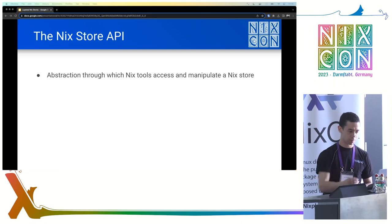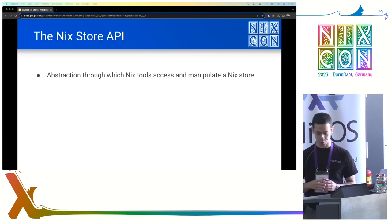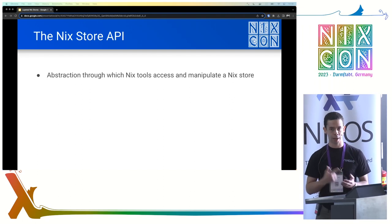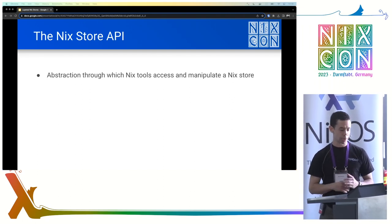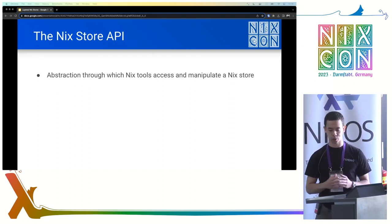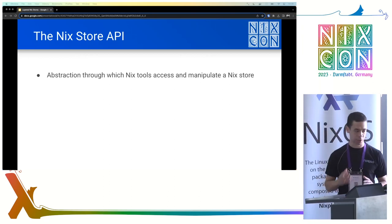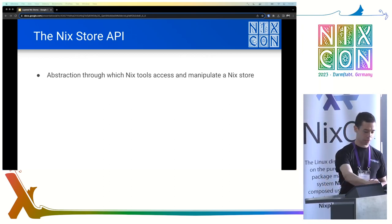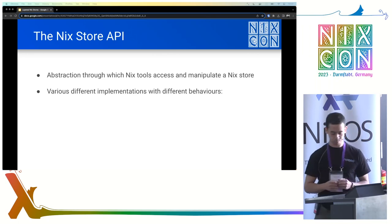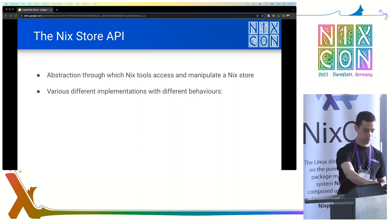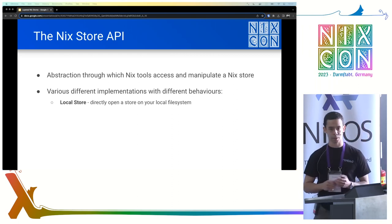The API has methods for basic operations, like checking what's in a store or for adding new stuff to a store. It also has methods for more advanced operations like garbage collection or verifying that a store's contents remain valid. There are several different implementations of the Nix store. The most prototypical of them is the local store, and as you might guess from the name,